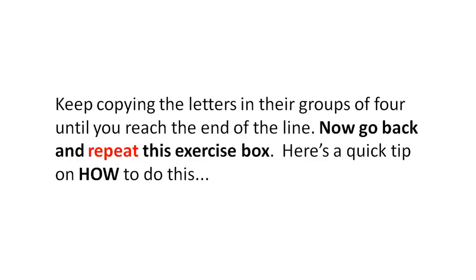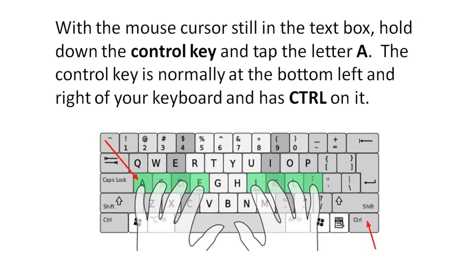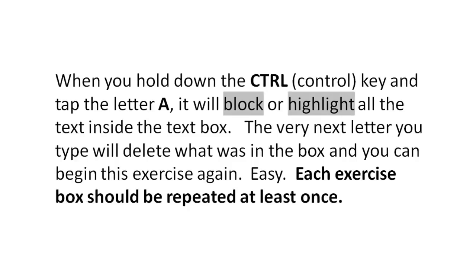Now go back and repeat this exercise box. Here's a quick tip: with the mouse cursor still in the text box, hold down the Control key and tap the letter A. The Control key is normally at the bottom left and bottom right of your keyboard and has the letters C, T, R and L on it. This will highlight all the text in the text box, and the very next letter you type will delete what was in the box so you can begin the exercise again.